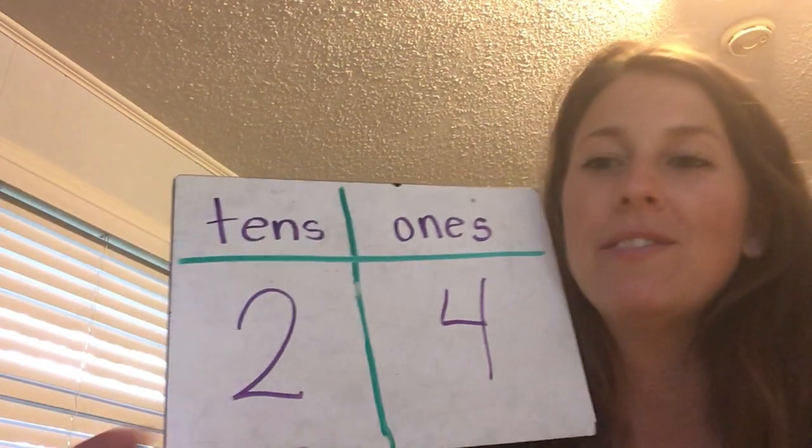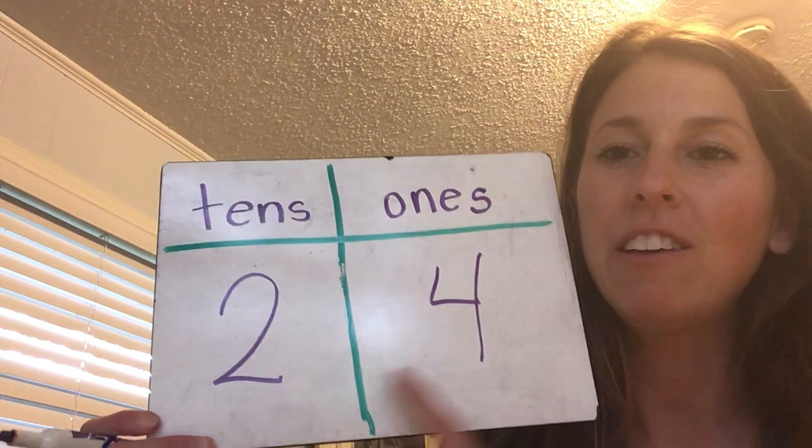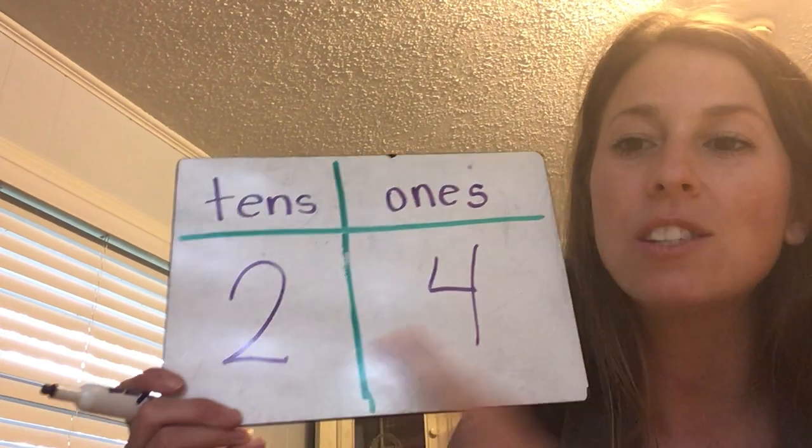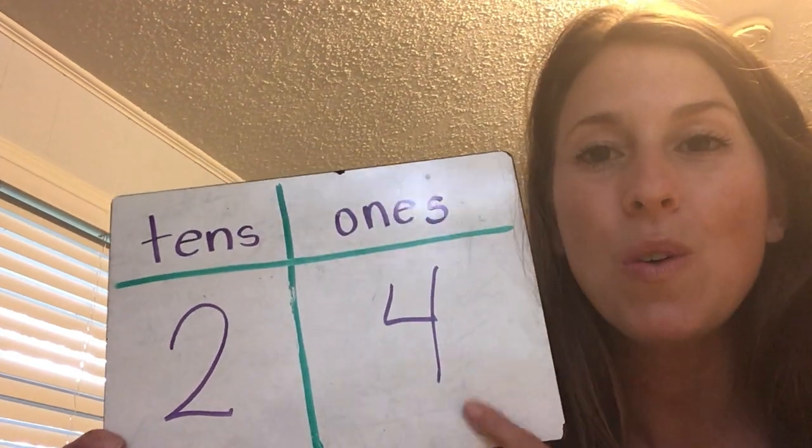My last number — listen to the clue. This number has two tens and four ones. Two groups of ten and four ones leftover makes twenty-four.